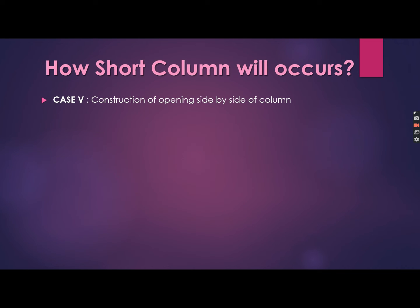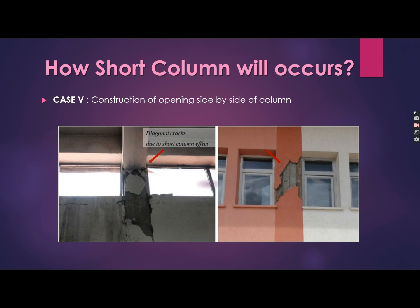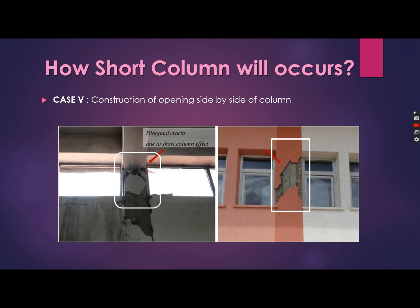Case five: construction of openings side by side of the column. As seen in this picture, a window or ventilation opening is provided just beside the column. Due to this, the column's free height is reduced to only the height of the opening, creating a short column and introducing the short column effect in the building.